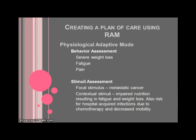Now that we have the basic outline of Roy's adaptation model, let's put together a care plan for our patient. We're going to begin with the physiologic mode. Physically, we see that the patient has lost a lot of weight, she's fatigued, and she's in constant pain. The main stimulus causing this is her regulatory subsystem — it's cancer — and it is solely responsible for her physical responses.